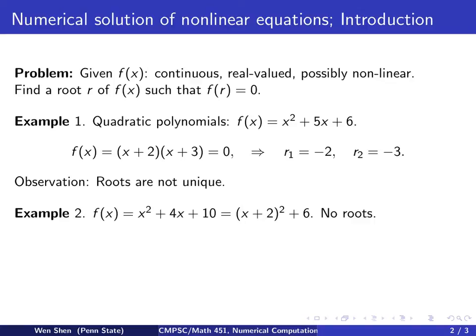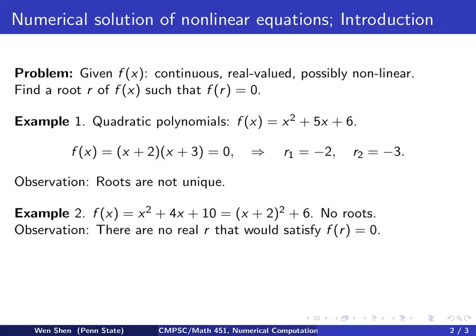Second example: still a quadratic polynomial. Consider x squared plus 4x plus 10. We can complete the square by adding a constant 4 to the first two terms, giving (x+2) squared plus 6. This function is always greater than or equal to 6, so it has no roots. This example shows that nonlinear functions might not have any roots.